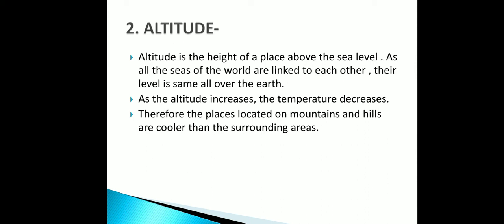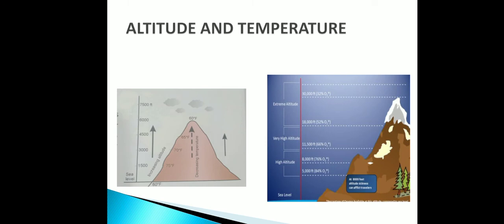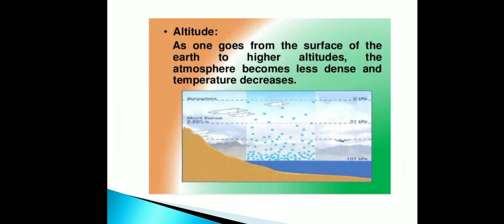Altitude is the height of a place above sea level. As all the seas of the world are linked to each other, their level is the same all over the Earth. As altitude increases, temperature decreases; therefore places located on mountains and hills are cooler than the surrounding areas. As one goes from the surface of the Earth to higher altitudes, the atmosphere becomes less dense and temperature decreases.